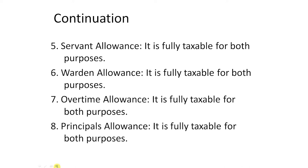Next one: overtime allowance. Overtime allowances are those allowances which are provided to the employees who work for an extra hour. It is also fully taxable for both purposes. Next one: principal's allowance. Principal's allowances are those allowances which are provided to the head of the institution. It is also fully taxable for both purposes.